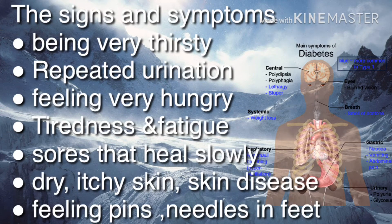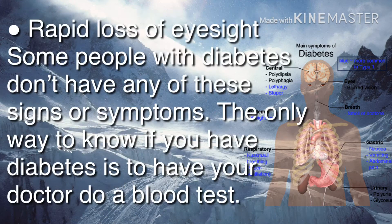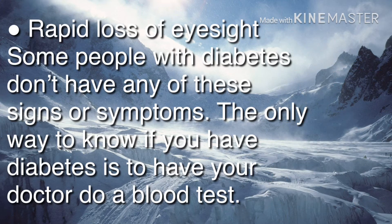The signs and symptoms of diabetes include: being very thirsty, repeated urination, feeling very hungry, tiredness and fatigue, sores that heal slowly, dry itchy skin, skin disease, feeling pins and needles in feet, and rapid loss of eyesight. Some people with diabetes don't have any of these symptoms — the only way to know is to have your doctor do a blood test.